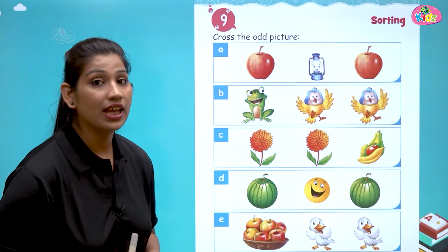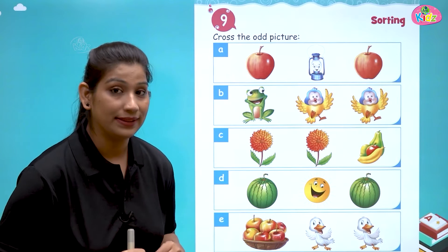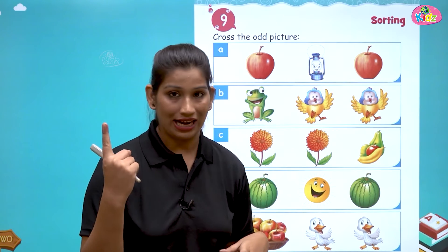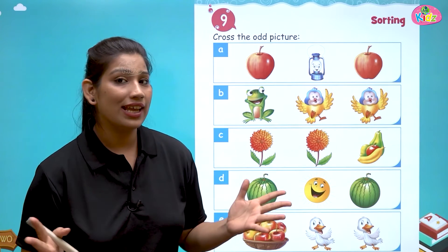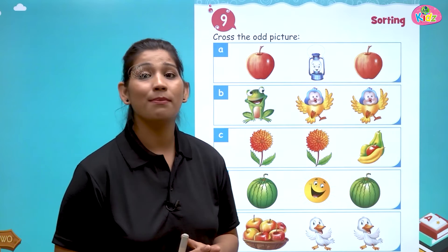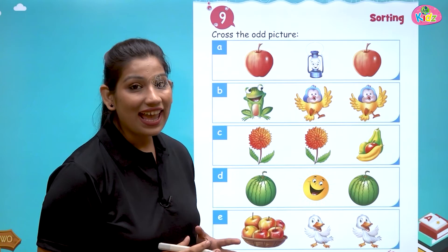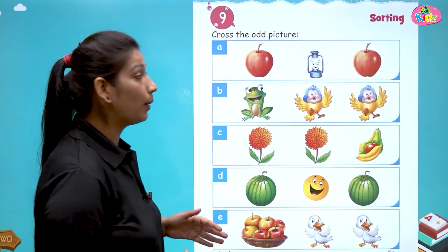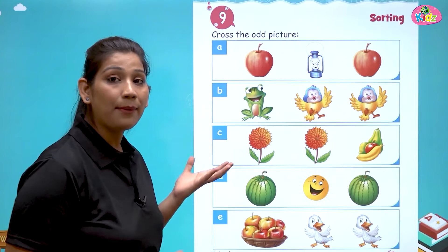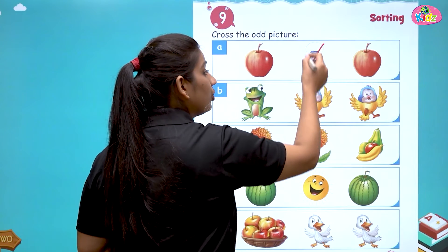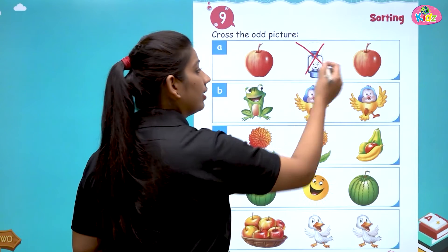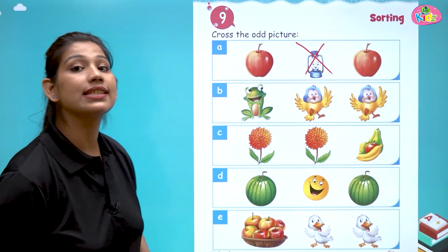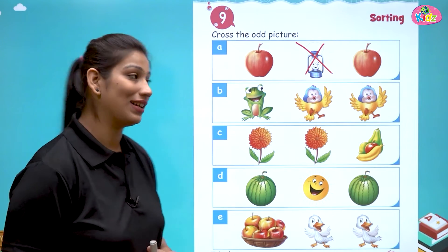Here we have fruits — apples. We have two apples and one lantern. So which thing is not matching up? Yes, lantern is not matching up with the apples. Apples are two in number; the lantern is one. So the lantern is odd.